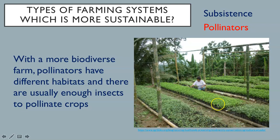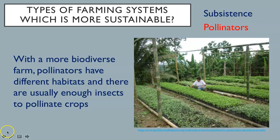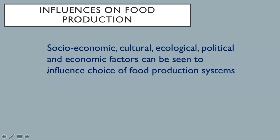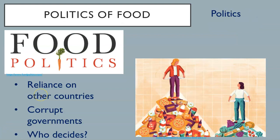As mentioned, there is enough food, and food production has kept up with the world population. However, we do keep growing. Therefore, we are using more land and we degrade more land. We demand more meat. We are reaching the limits of growth. Remember, socioeconomic, cultural, ecological, political, and economic factors can be seen to influence choice of food production systems. Countries with low food supplies are called low-income, food-deficient countries, and become reliant on other countries for their food. If countries rely on other countries for food, they are under the power of those countries. There are political influences at play, and we must ask what the impacts are of corrupt governments that don't distribute food to those in need.